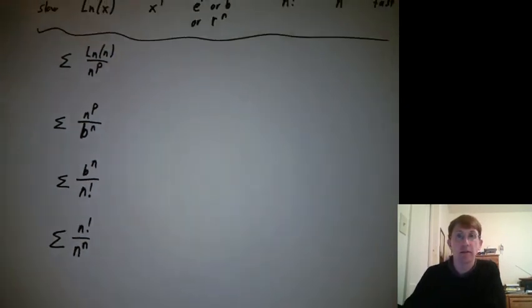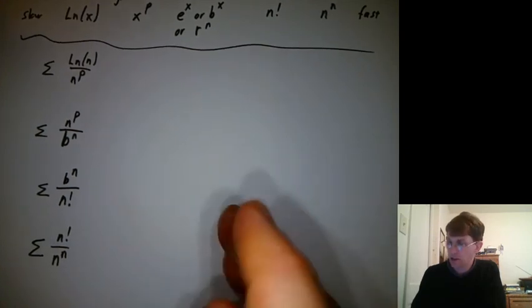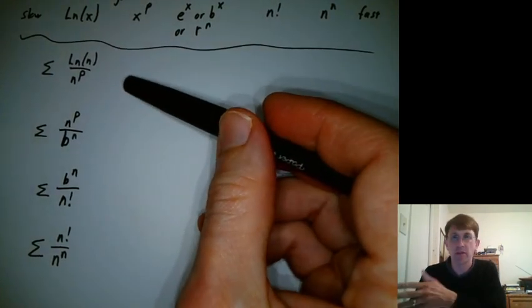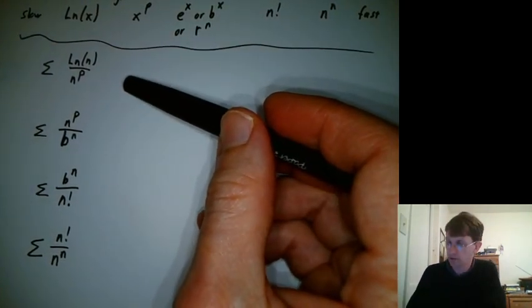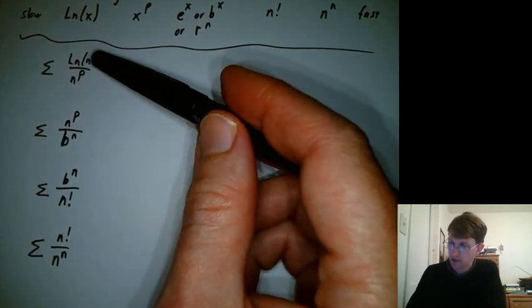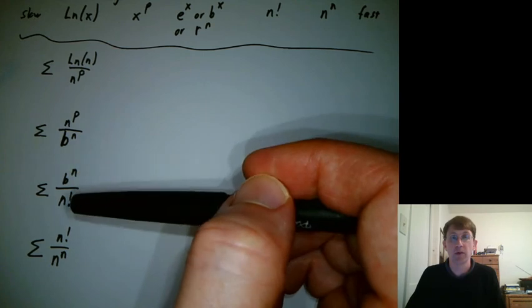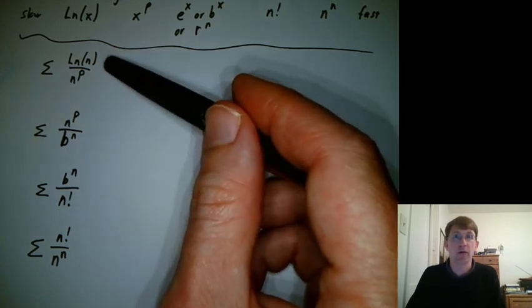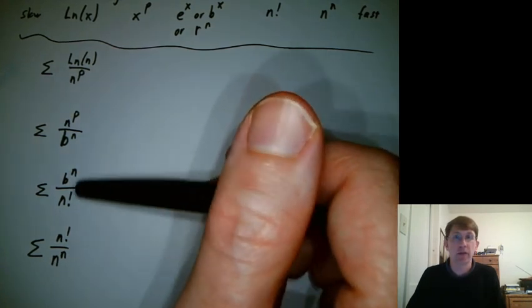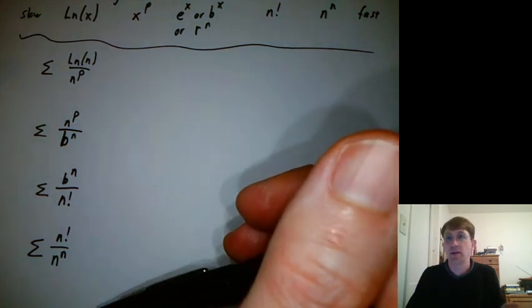So I suggest this as our first set of kind of cumulative review exercises, even though it's not formally titled as a cumulative review. Because the answers to these will tell us interesting things about how fast one is growing compared to the other. So that's what I would suggest as the first set of things to work on, and then go work on the homework.